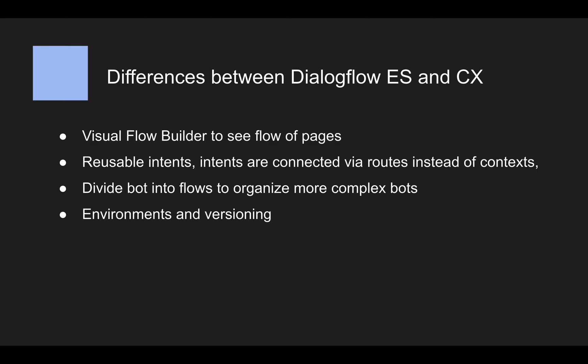Another tool that helps with building more complex bots is environments and versioning. While you're iterating a new version of your chatbot, you can create new versions. If you feel like you're going in the wrong direction or breaking things, you can go back to the last version. You can also have a test environment and a live environment, so only when you're sure the new version is ready do you switch environments and release it to the public.